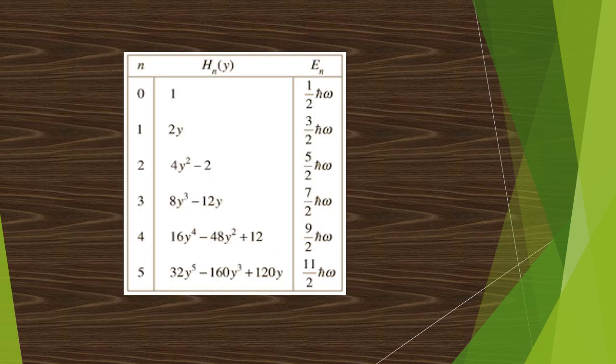Here are some hermit polynomials with the corresponding eigenvalues. For n equal to 0, 1 by 2 h cross omega. For n equal to 1, the hermit equation is 2y, and the energy value will be 3 by 2 h cross omega. For n equal to 2, the hermit equation is 4y square minus 2, and the eigenvalue will be 5 by 2 h cross omega.